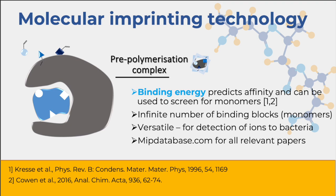Unlike proteins which are composed of only around 20 naturally occurring amino acids, when you work with polymers you have an infinite library of building blocks or monomers that you can use. So it's very important to know upfront what the best combination of monomers is and also what the ratio is. Generally you would need more than just one functional monomer because you expect the monomers to anchor onto different binding sites — and that's the key to achieving selectivity. This process is very flexible and versatile, applicable from really small compounds or even ions all the way to whole bacteria and cells. There's also a useful database at mipdatabase.com where you can search for templates to see what others have already done.